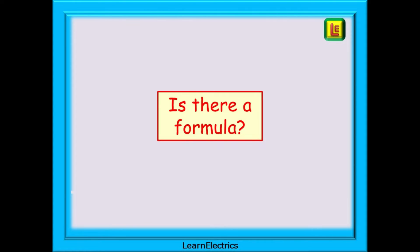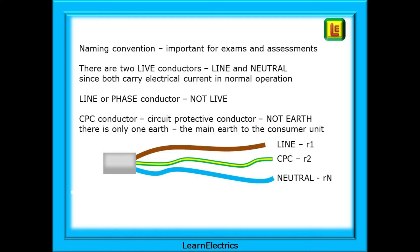So is there a formula that can be used to calculate the resistance values of single conductors when we only know the value of them when they are combined? We must begin by understanding the naming convention used in this video, which is also important for exams and assessments. Using the wrong terminology may cost you points in an exam. There are two live conductors — line and neutral — since both carry electrical current in normal operation. The line conductor can also be called the phase conductor, but it should not be called the live.